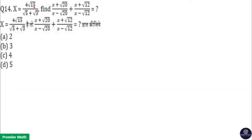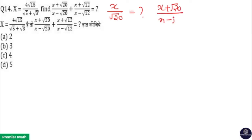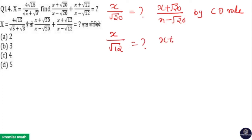x is equal to 4√15 divided by √5 plus √3. Find (x + √20)/(x - √20) plus (x + √12)/(x - √12). You can see these parts are in the form of the componendo-dividendo rule. If you find the value of x/√20, you can find (x + √20)/(x - √20), and similarly for x/√12 to find (x + √12)/(x - √12).